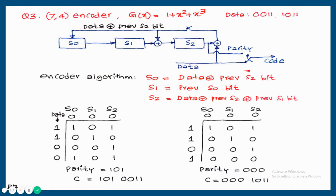The final code transmits data first, then parity bits. So the output code is: data 0011 followed by parity 101, giving 1, 1, 0, 0 (data) then 1, 0, 1 (parity). The switching position is first data, then parity — same as the previous cases.